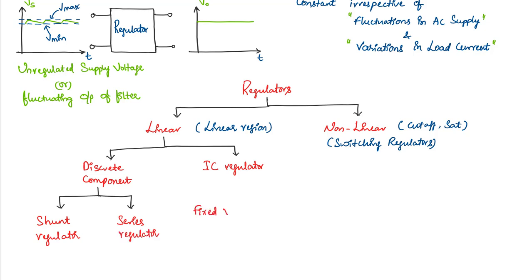One is shunt regulator and the other one is series regulator. In IC regulators we have fixed voltage IC regulators and adjustable voltage IC regulators. Our concentration is about linear regulators as we are talking about linear power supplies, and we spend most of our time in discrete component based regulators. We will see both shunt and series type regulators.